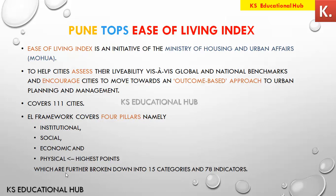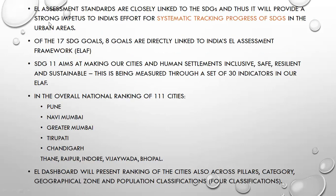These four pillars are further broken into 15 categories and 78 indicators. The ease of living assessment standards are closely linked to the Sustainable Development Goals. There are 17 Sustainable Development Goals, which are asked in many exams. If you want a trick to remember them, let me know in the comment section and I will make a video on the SDGs.